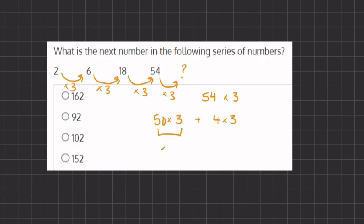Now 50 times 3 gives us 150 plus 4 times 3 which gives us 12. Now 150 plus 12 gives us 162 which will be our final answer.